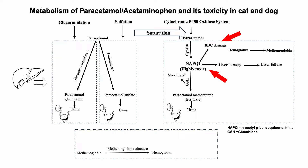NAPQI has several toxic effects, including oxidative damage to RBCs and liver damage. NAPQI causes the oxidation of ferrous iron to ferric iron, converting hemoglobin to methemoglobin. Methemoglobin is a poor carrier of oxygen, which clinically manifests as respiratory distress, labored breathing, and cyanosis. NAPQI also damages the liver, and centrilobular necrosis is a common pathological lesion seen in paracetamol poisoning.